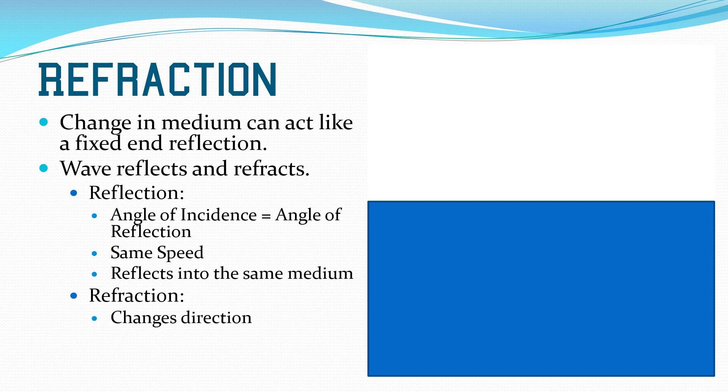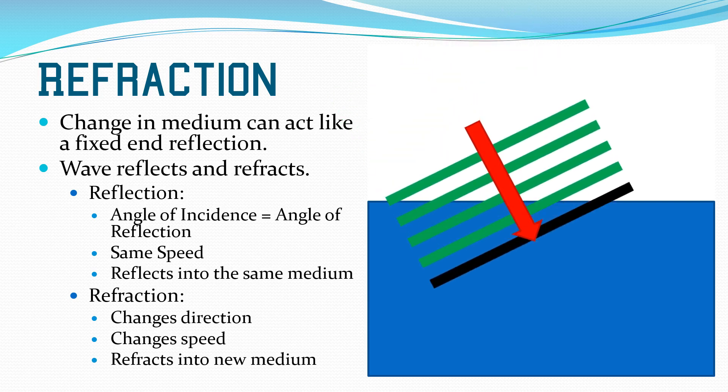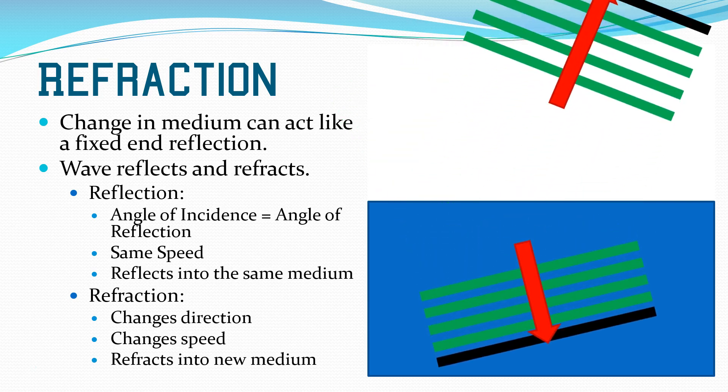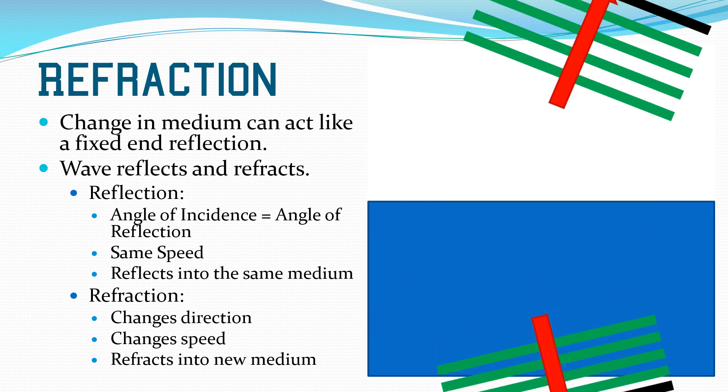When we refract, it changes direction, so the angle of incidence is not the same as the angle of refraction. It changes speeds because it's changing mediums. So now we have our waves coming in at an angle, one set refracts slower, one set reflects at the same exact speed.